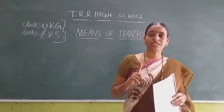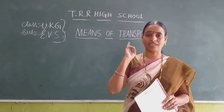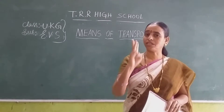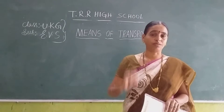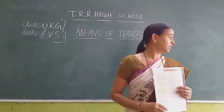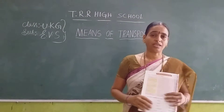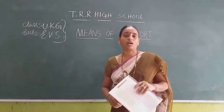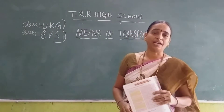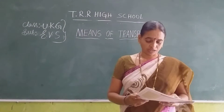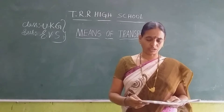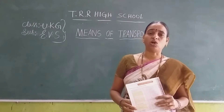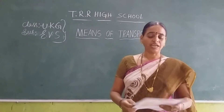One is land transport, the second one is water transport, and the third one is air transport. In land transport, we travel by autos, cars, bikes, vans, scooters, trains — these we use to travel on land.